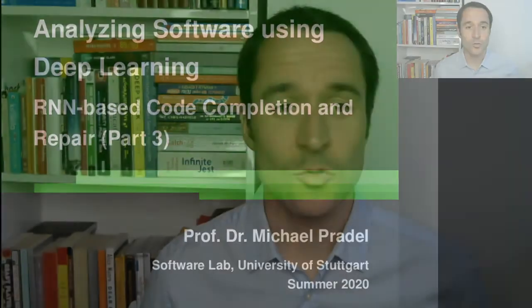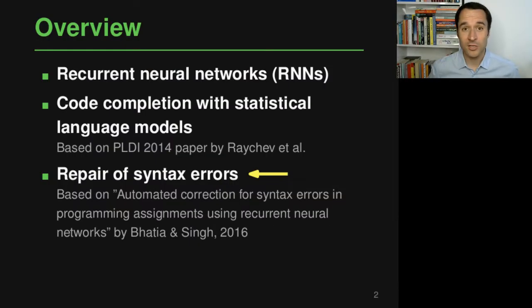Specifically, what we want to do in this third part is to look into another application of recurrent neural networks. This application is about repairing a specific kind of error in programs, namely syntax errors. Again, this is based on recent research published in a 2016 paper which of course gives many more details than I can give here in this course.